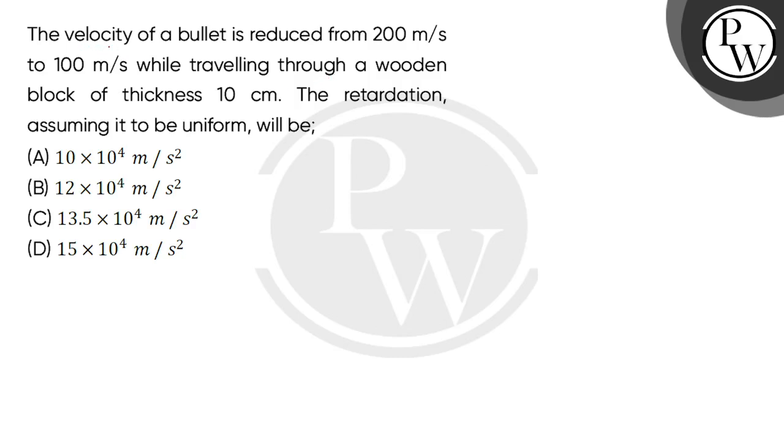Hello children, let's read the question. The velocity of a bullet is reduced from 200 meter per second to 100 meter per second while traveling through a wooden block of thickness 10 centimeter. The retardation, assuming it to be uniform, will be.